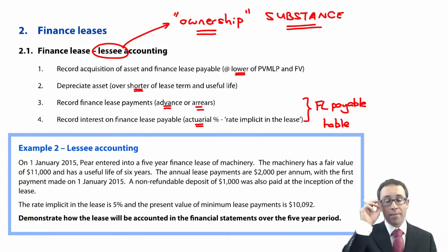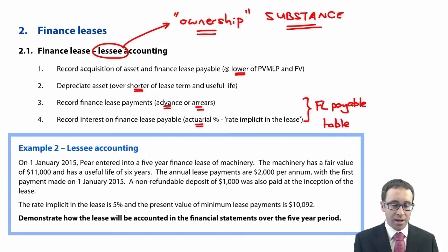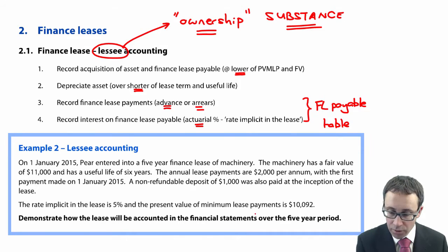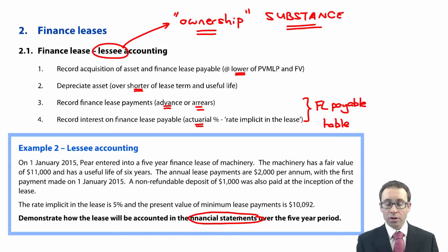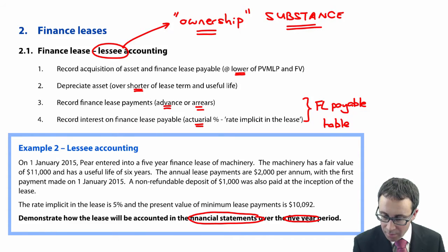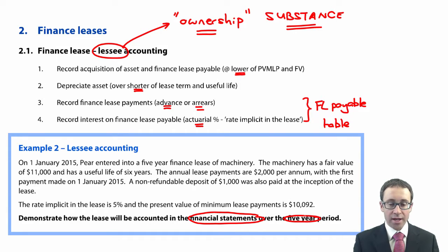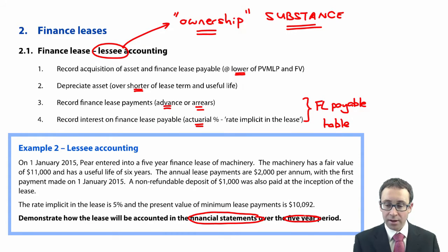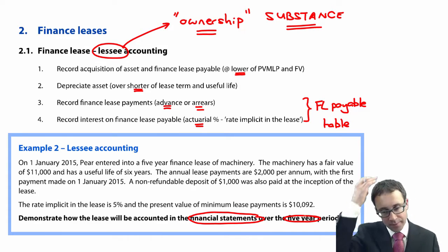Let's look at the example on lessee accounting for a finance lease, demonstrating how the lease will be accounted for in the financial statements across the statement of financial position and profit or loss over a five-year period. On 1st January 2015, at the start of the year, a company entered into a five-year finance lease of machinery. The machinery has a fair value of $11,000 and a useful life of six years.